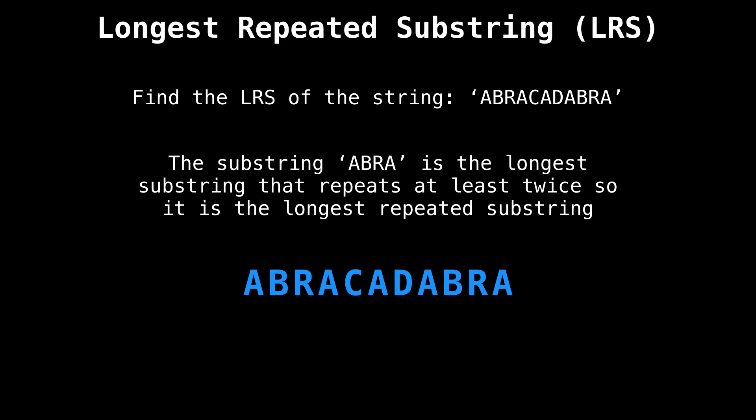"Abra" is the longest substring that appears at least twice in the string, so we call it the longest repeated substring. Here you can see the first instance of "abra" on the left, and the second repeated instance of "abra" on the right. Although these substrings are disjoint and do not overlap, in general this is permitted for the longest repeated substring.